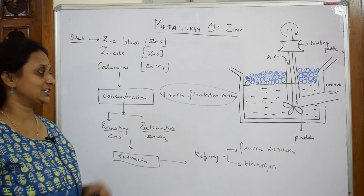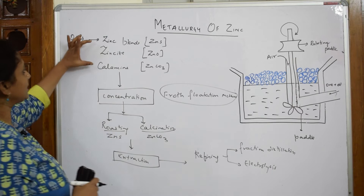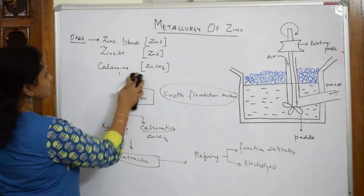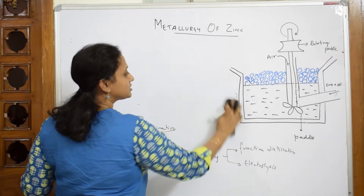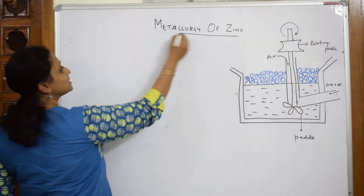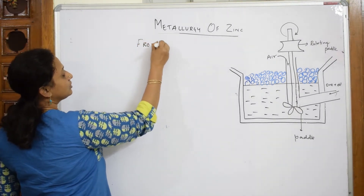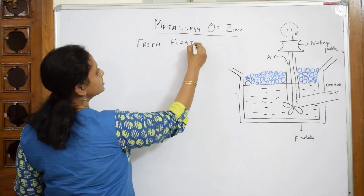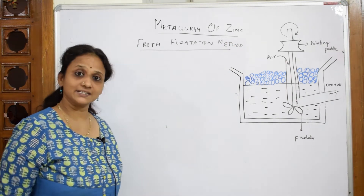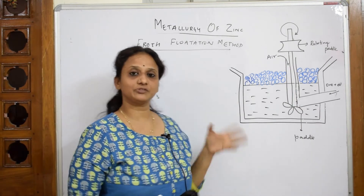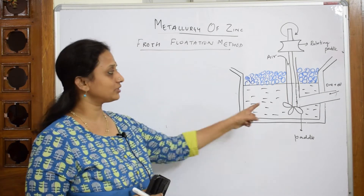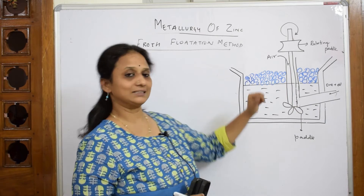Let us start with the first concentration method, that is froth flotation method. Whenever we are writing froth flotation, the keyword which is present in the board marking scheme is the principle of froth flotation — that is the most important heading. Now, in a froth flotation tank, which is a rectangular vessel, you are going to collect the ore. As I have shown in the diagram drawn here, this is your froth flotation tank.